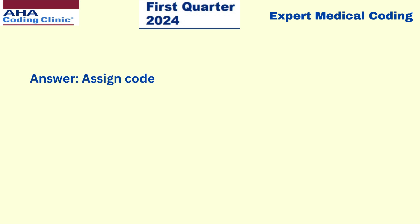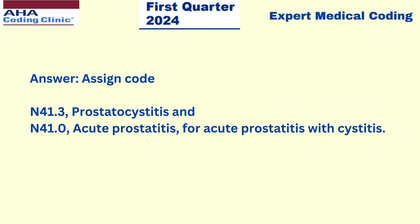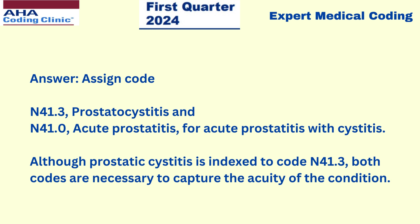The answer is we have to assign code N41.3 for prostatocystitis and code N41.0 for acute prostatitis. Although prostatic cystitis is indexed to code N41.3, both codes are necessary to capture the acuity of the condition. In this scenario, we have to assign two codes — one for prostatocystitis and one for acute prostatitis — to show the acuity of the condition.